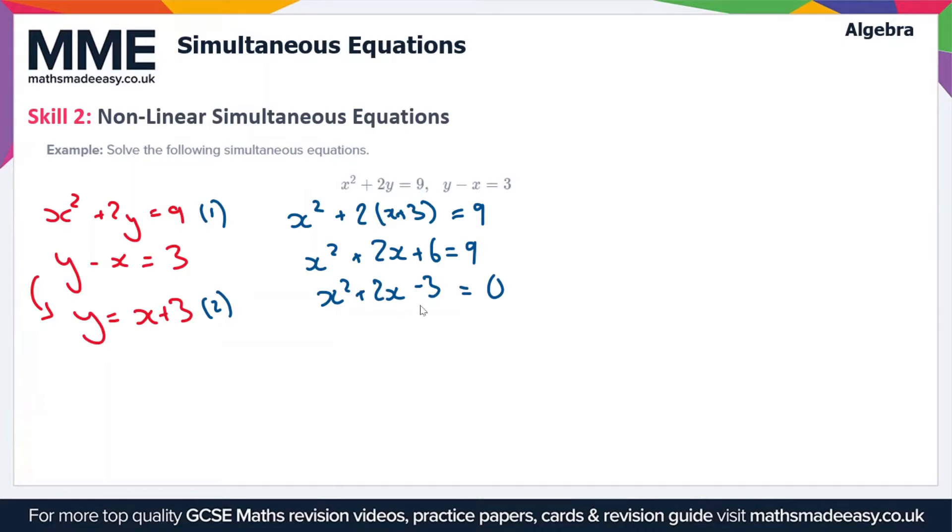Now we can solve this quadratic by factorizing. We get (x + 3)(x - 1) = 0. If you're not sure about factorizing quadratics and solving them this way, we've got separate videos on these topics.